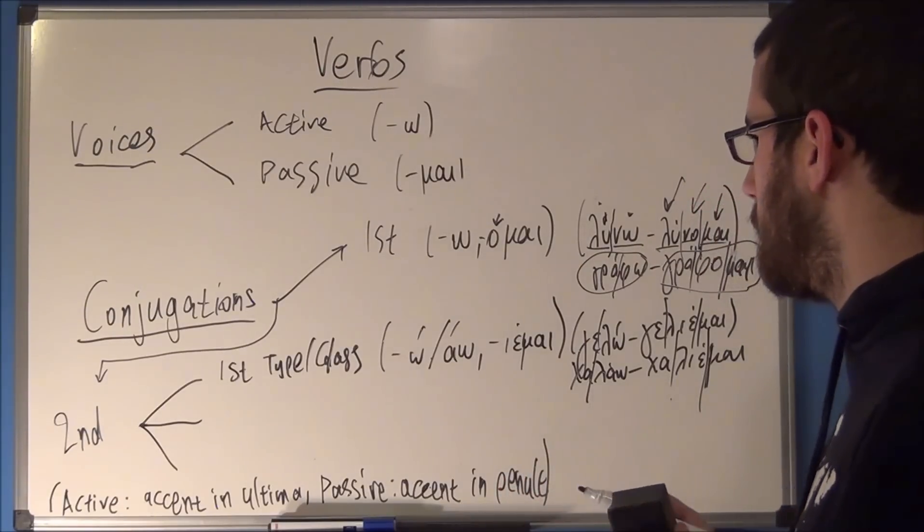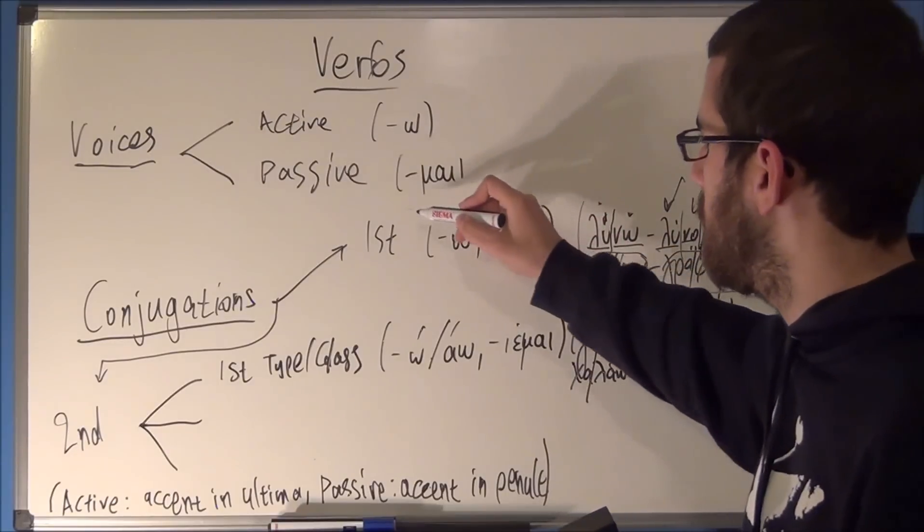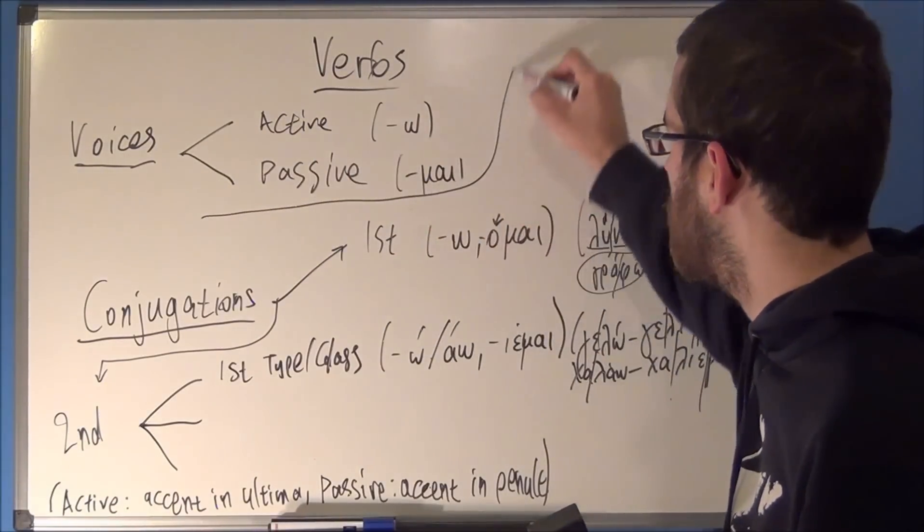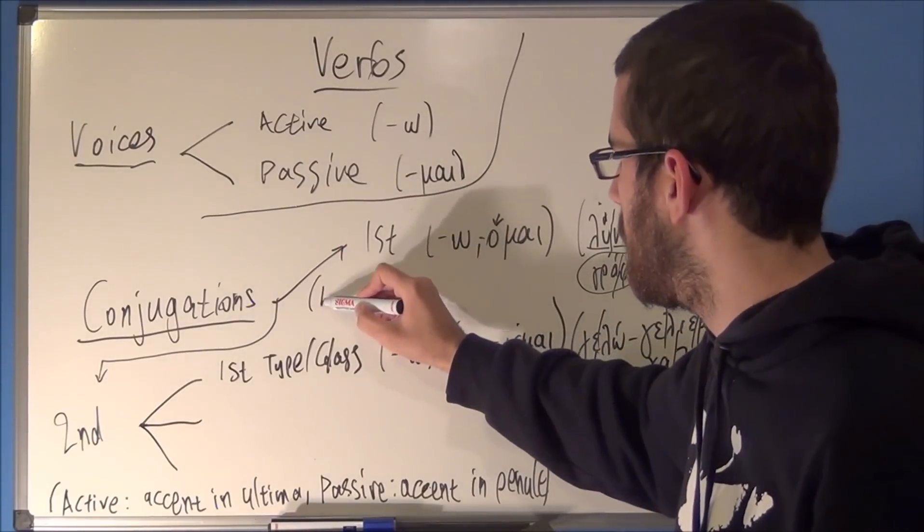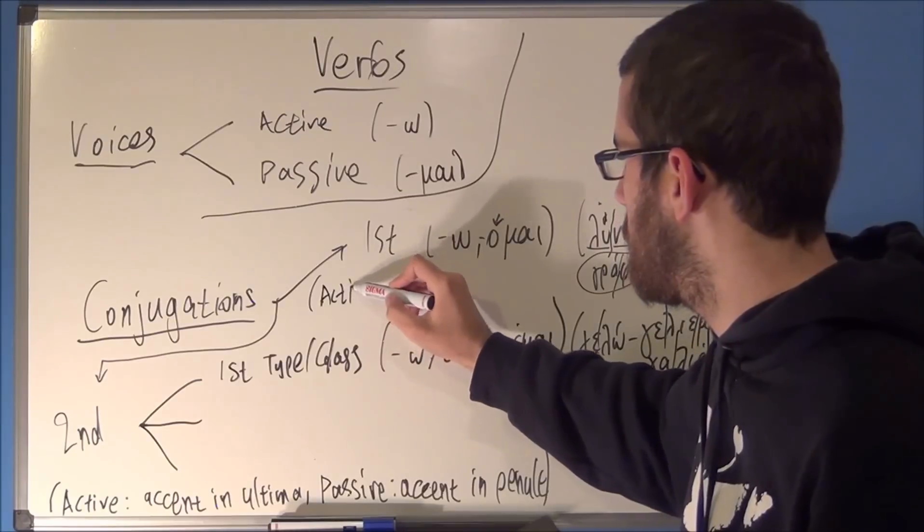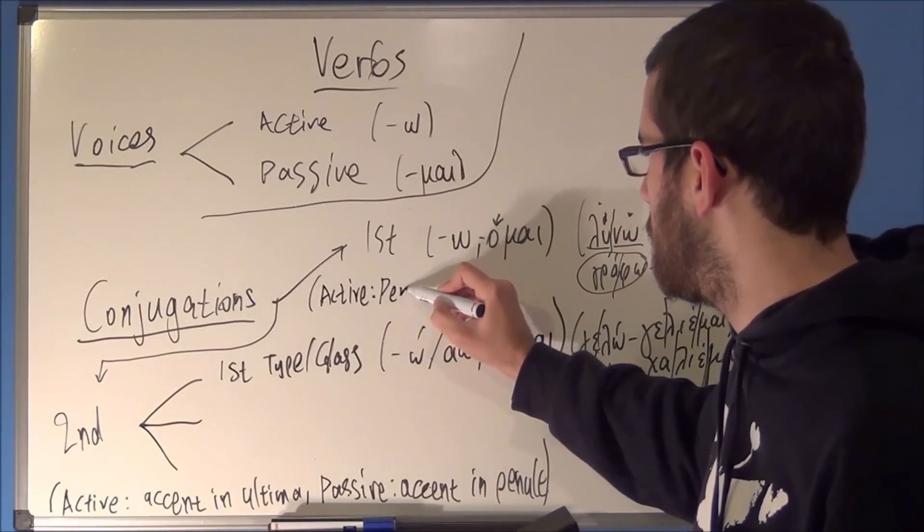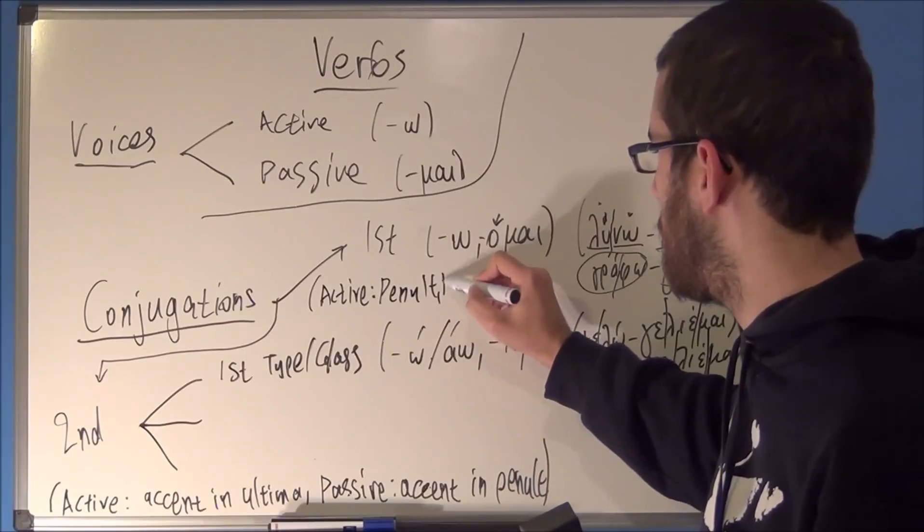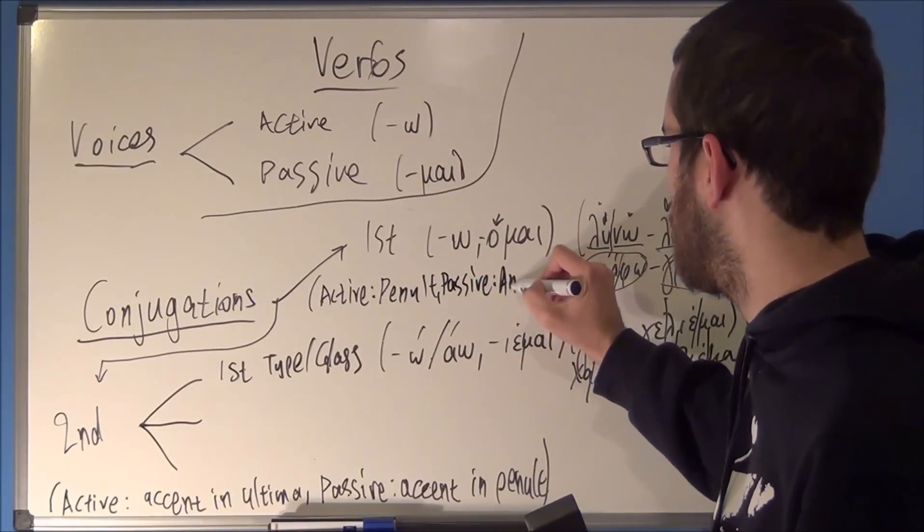And this is like the rule of thumb. That's how you actually recognize them. I don't have a lot of space, so. But I'm still going to write this down for reference. For the first you have active, penult, passive, antepenult.